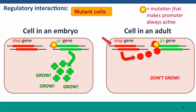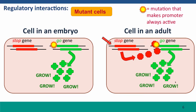What about a similar mutation in the promoter of the go gene? This mutation won't change the phenotype of embryonic cells because the go gene is already on. But it will change the phenotype of the adult cell, because it will cause the go gene to be expressed even though the stop protein is being made. That means this cell is going to grow when it shouldn't. This is important because this phenotype is the phenotype of a cancer cell — a cell in an adult growing when it shouldn't.